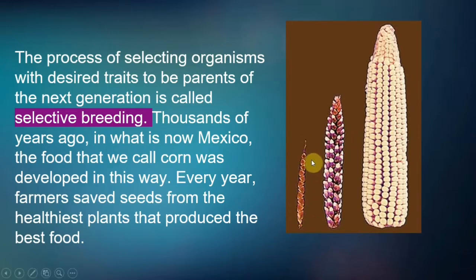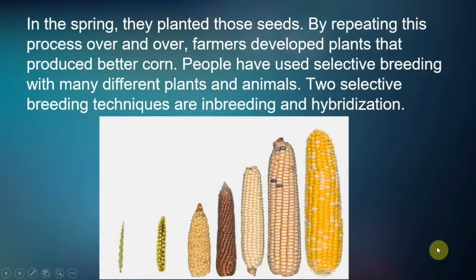This represents the first type of corn we have. Through intensive selective breeding, we end up with a corn like the ones we eat now. In the spring, they planted those seeds. By repeating this process over and over, farmers developed plants that produce better corn. People have used selective breeding with many different plants and animals. Two selective breeding techniques are inbreeding and hybridization.